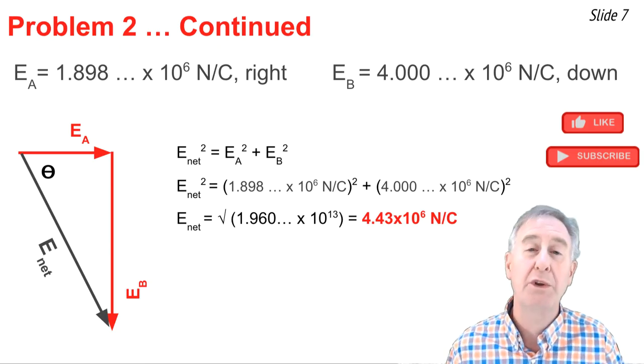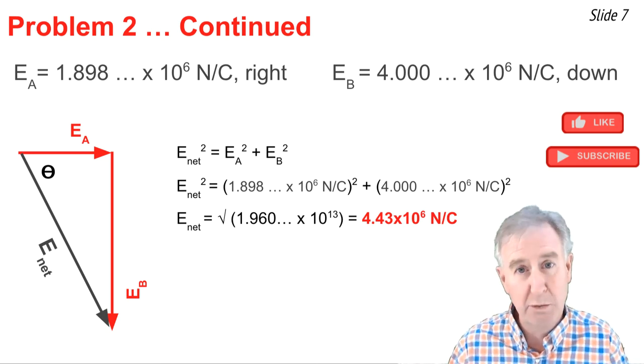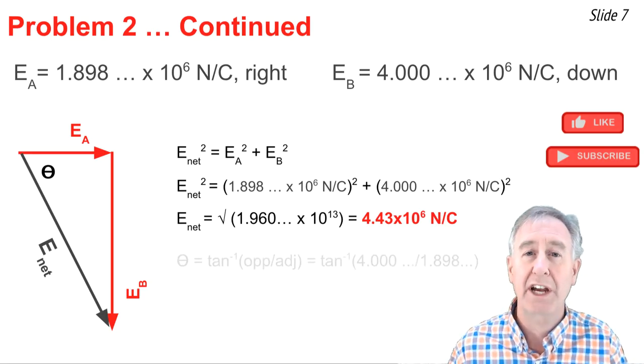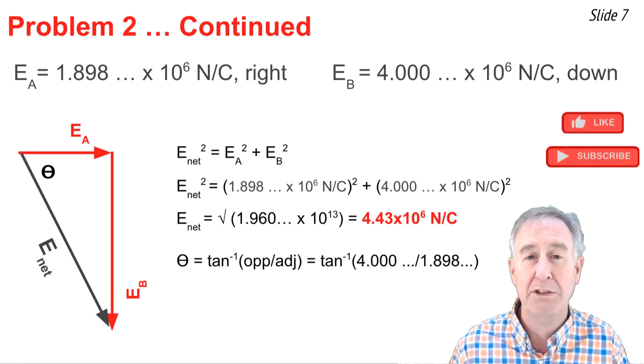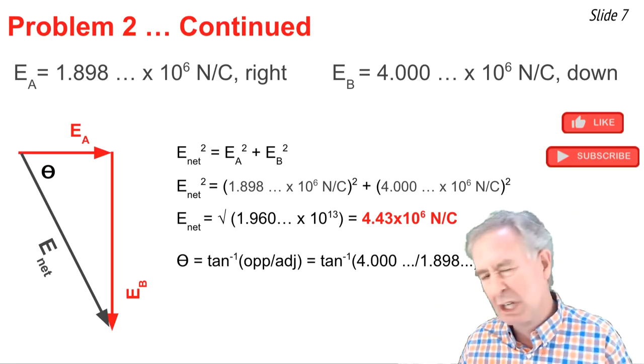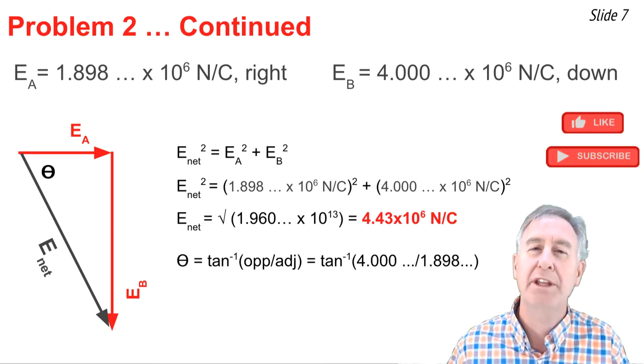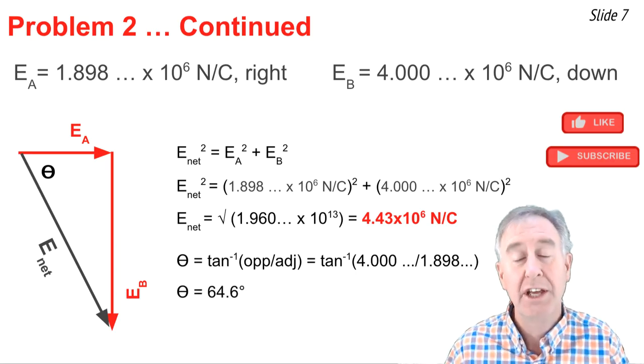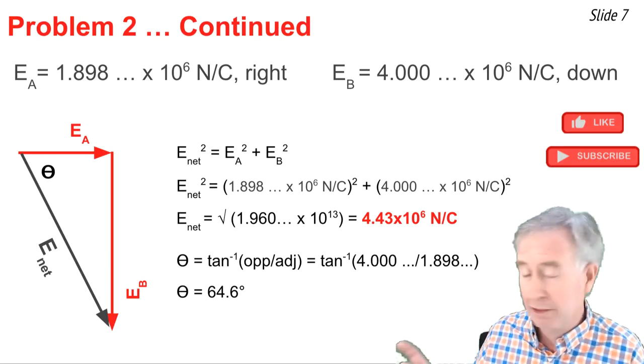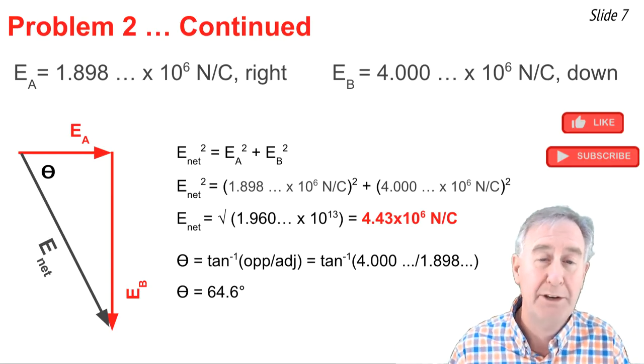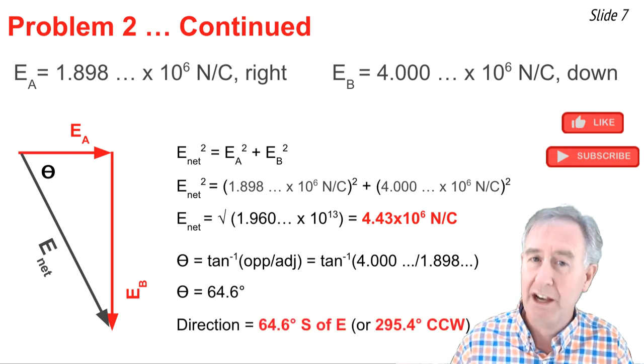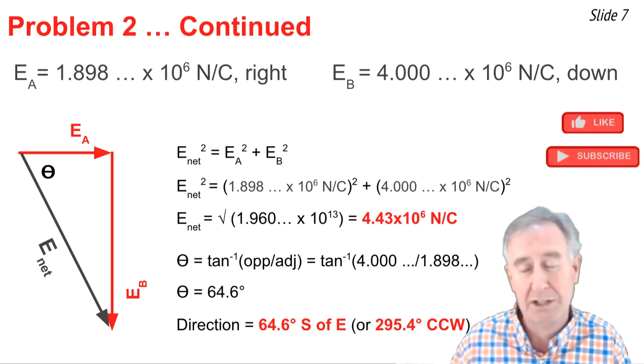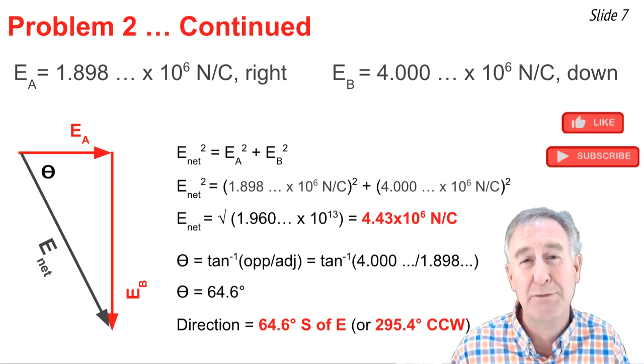Now that's the magnitude. I also want to know the direction of this net electric field vector, and that's why I have the theta, the angle theta, in the triangle. The tangent of theta would be the ratio of the side opposite to the side adjacent. So I take values of the side opposite and the side adjacent, and I substitute it into that tangent equation, pull out my calculator, and find out what the inverse tangent of 4 divided by 1.898 is. It comes out to be 64.6 degrees. So what that tells me is the angle theta inside the right triangle there. So the direction of the hypotenuse is 64.6 degrees south of east, or expressed using counterclockwise convention, it would be 360 minus the 64.6 degrees, or 295.4 degrees counterclockwise.